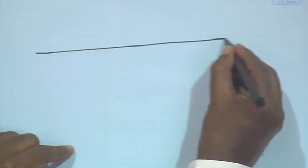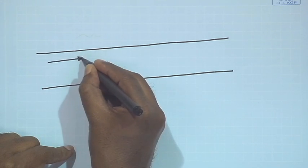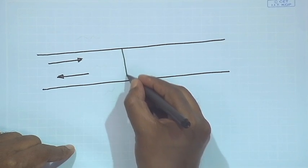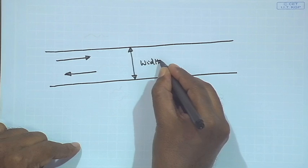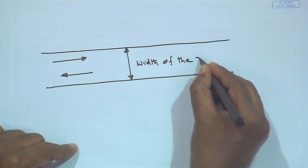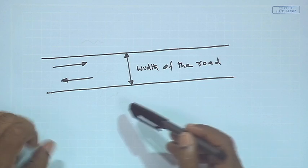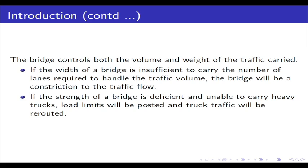For example, the road is moving in a certain direction, and there are a number of issues — how do you decide the width of the road, and also the weight of the vehicles. If the width of a bridge is insufficient to carry the number of lanes required to handle the traffic volume, the bridge will be a constriction to the traffic flow.